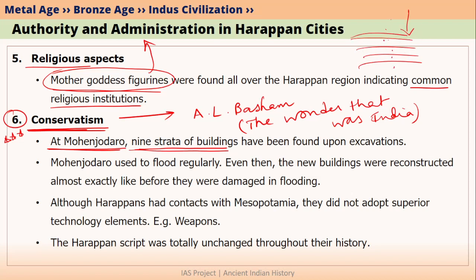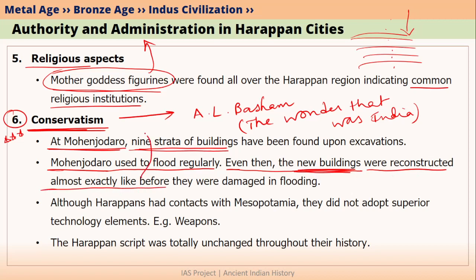Upon excavating, we found different layers in which buildings were present. Mohenjo-daro is located on the flood plains of the Indus, so during monsoons it used to flood regularly, and buildings used to get damaged. Once the floodwaters receded, Harappan people started building new buildings again in the same locations. For example, if someone lost their house in the floods, after the water receded they came back and built the same building at the same location with the same plan. Buildings were reconstructed almost exactly as before. This shows that Harappans did not want to change.